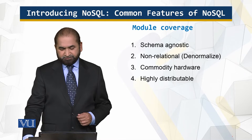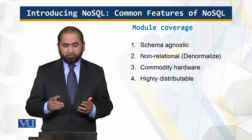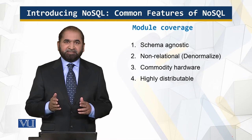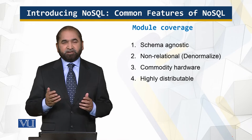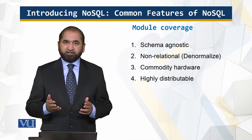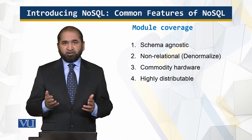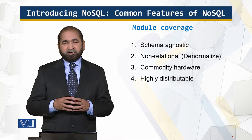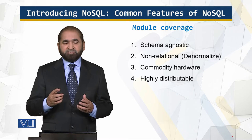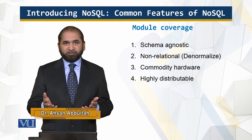Here is the module coverage. NoSQL databases are schema agnostic — they are schema agnostic and they are not normalized, meaning they are denormalized. They work on commodity hardware, which are inexpensive machines that don't cost a lot, but collectively they can process and store lots of data that an expensive machine can do. They are not very specific machines for specialized use, so they are not expensive.